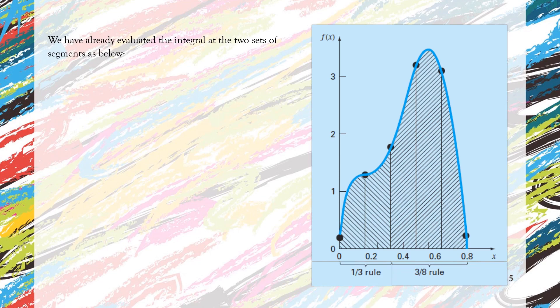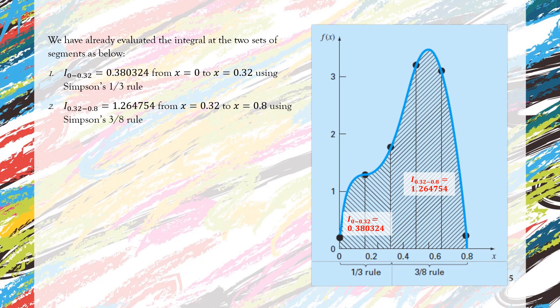We have already evaluated the integral at the two sets of segments, which can be seen in the figure. The first set is the first two segments and the second set is the last three segments, which we solve using two different rules. So the first segment, I use that subscript i, which is the integral from 0 to 0.32 referring to the first two segments. So the value of the integral on those two segments is 0.380324.